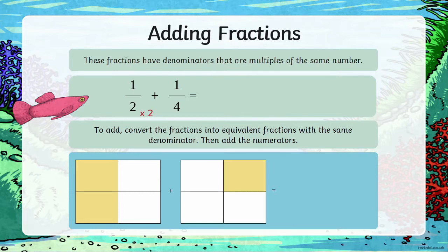So since two times two is four, we're going to go ahead and multiply that. Then because we've done that to the number on the bottom, we're also going to need to do that to the number on the top or the numerator.